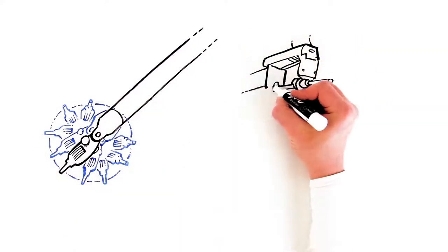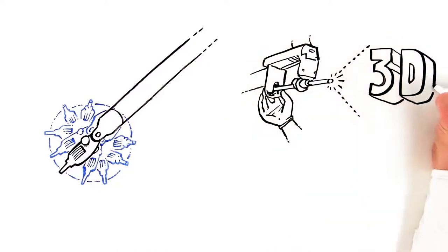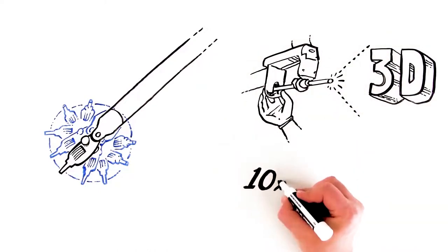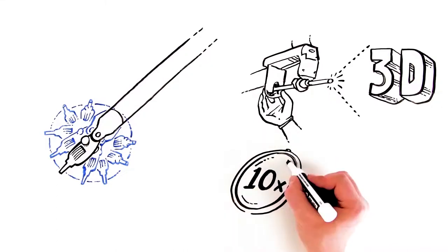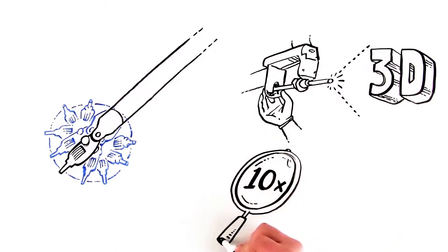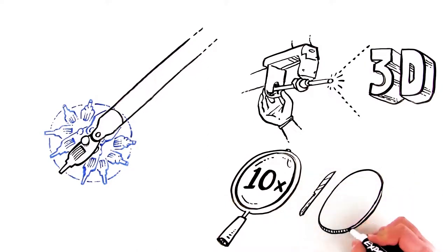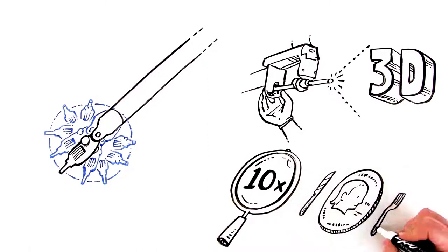The DaVinci camera allows the surgeon to see in 3D and magnified to 10 times its normal size, so they can see details more clearly than with the naked eye. It would be like looking at a quarter the size of a dinner plate.